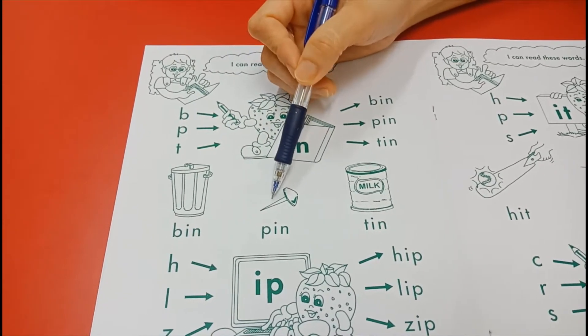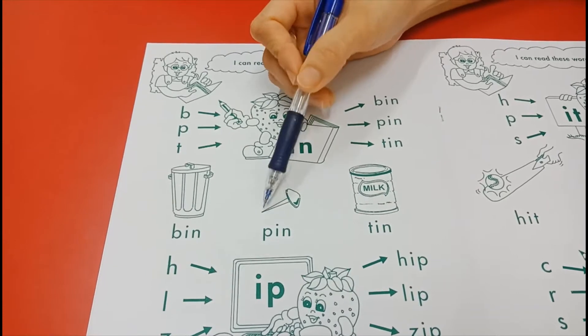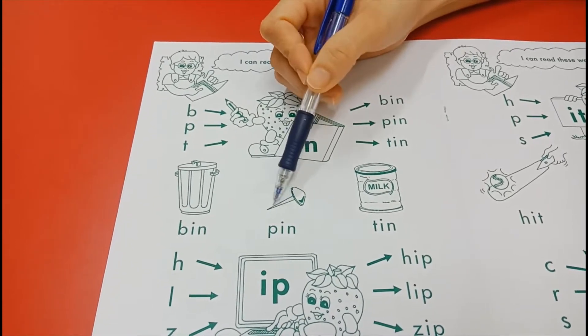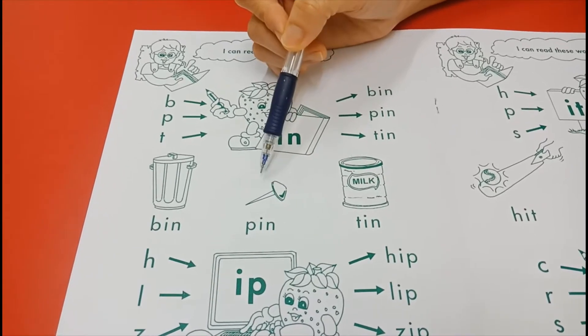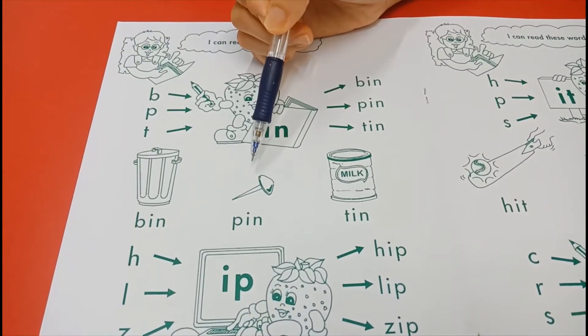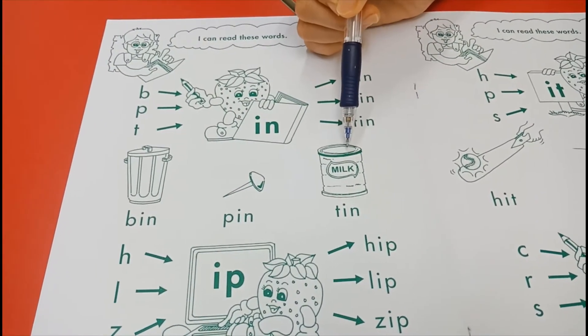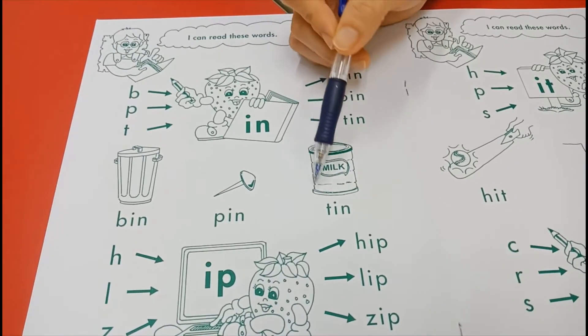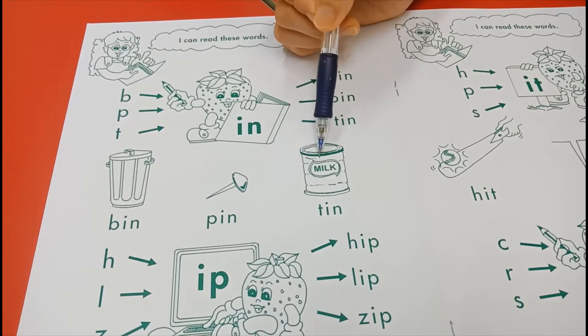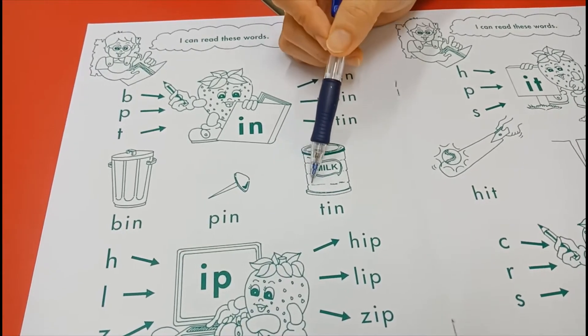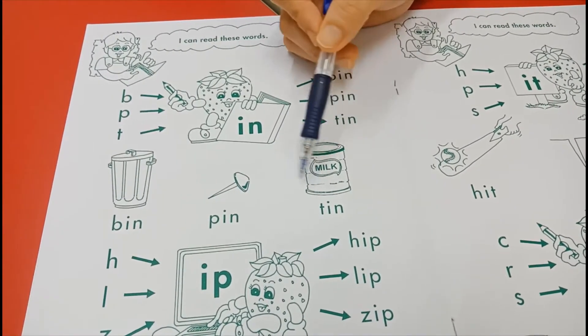Pin. Pin is sharp, it's like a sharp nail, but we use this pin to put paper on the board. Then you take a pin and pin the paper on the board. And then we have tin. Everything we have like Milo, Milo tin. You have the milk tin. So this is tin.